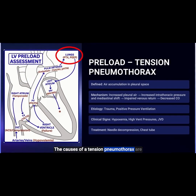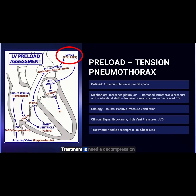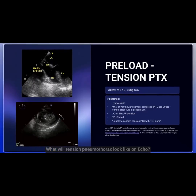The causes of a tension pneumothorax are trauma or positive pressure ventilation. The clinical signs that you may see are hypoxemia, high vent pressures, and jugular venous distension. The treatment is needle decompression and chest tube placement.